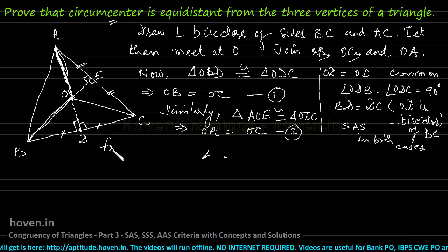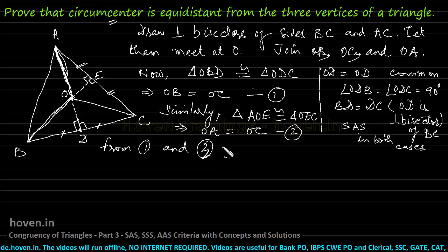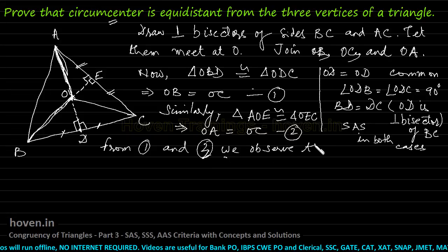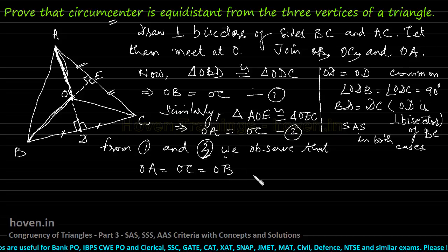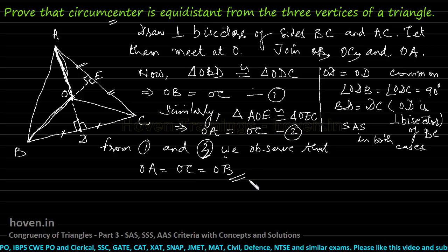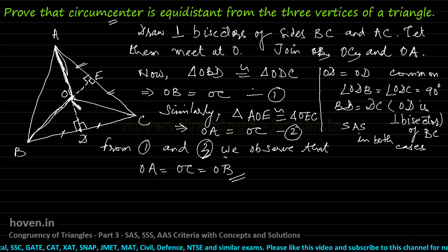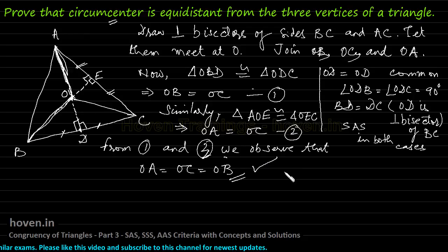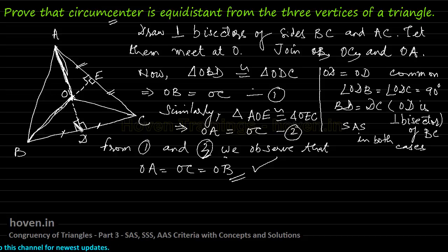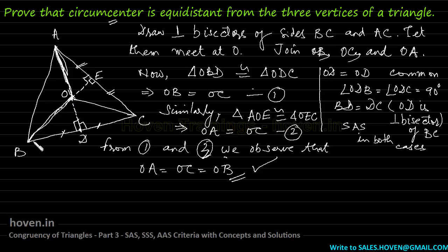From equations 1 and 2, we can observe that OA equals OC equals OB. What this statement means is that the intersection O of two perpendicular bisectors of sides will be equidistant from all three vertices. This is only what we can say from this — we cannot say that O is the intersection of all three perpendicular bisectors. O is the intersection only of two perpendicular bisectors; the third has not been proved yet.